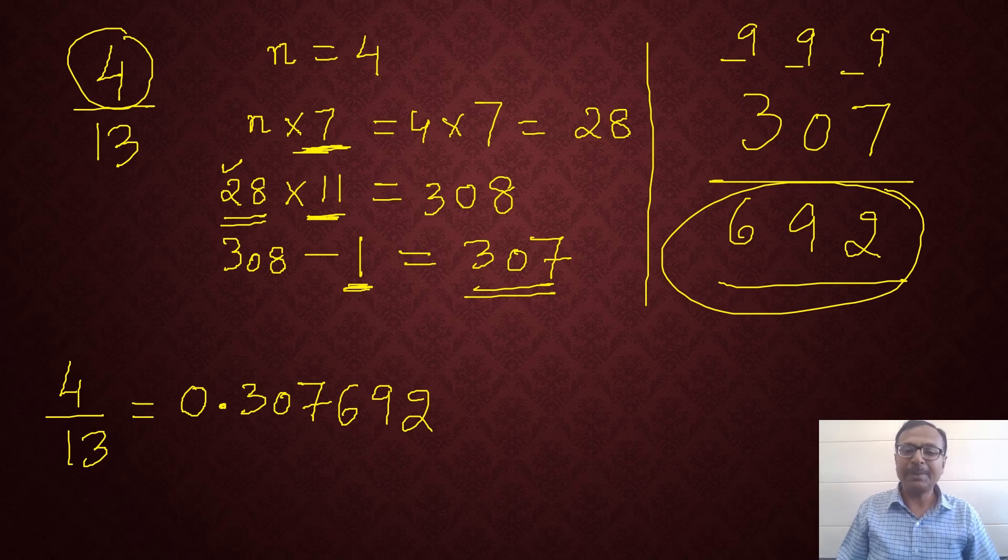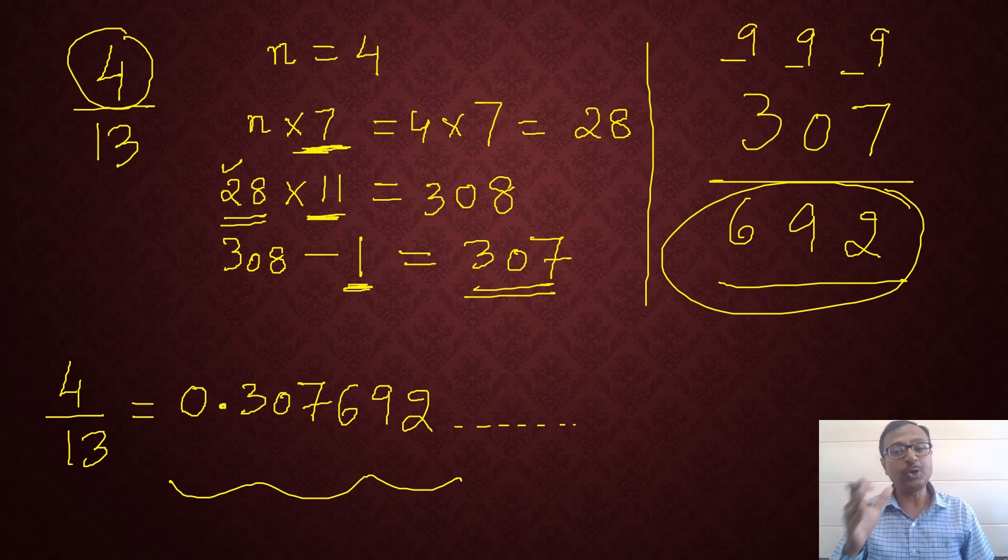And now, pick up your calculators and check 4 divided by 13 will be 0 point 307692 followed by some more digits. But I don't think you require more than 6 digits in any type of calculation. See, even if you have understood like 30 to 40% of this, it is perfectly fine because I am going to give more examples.